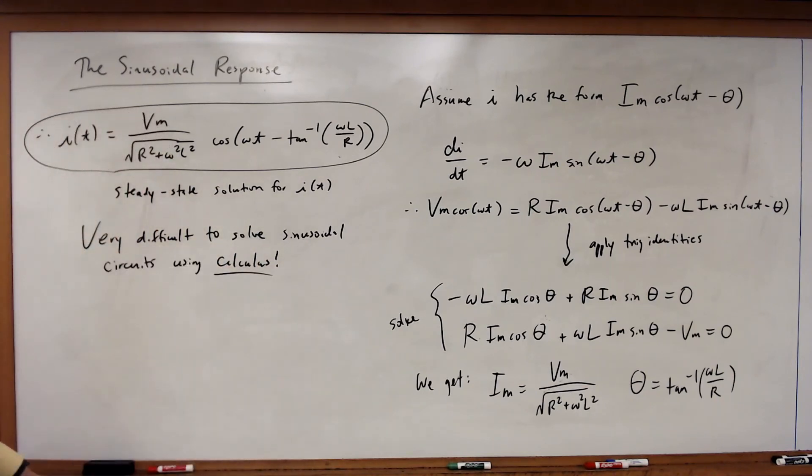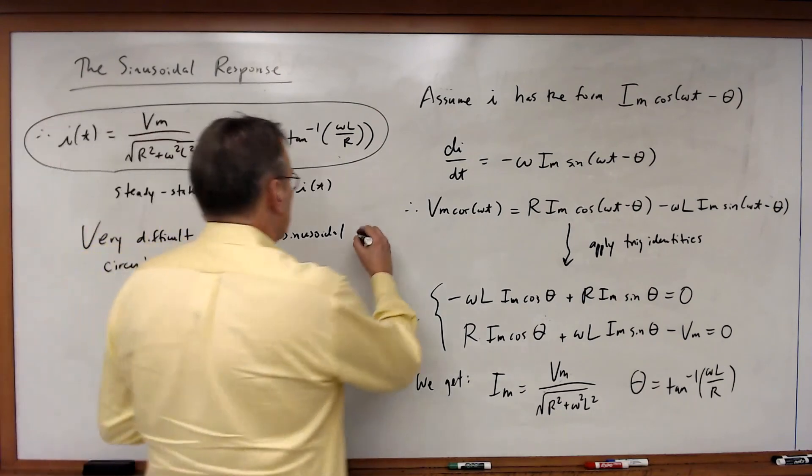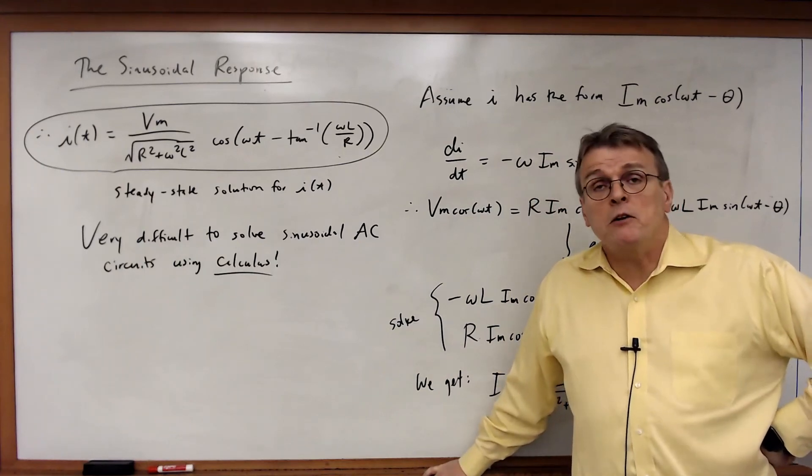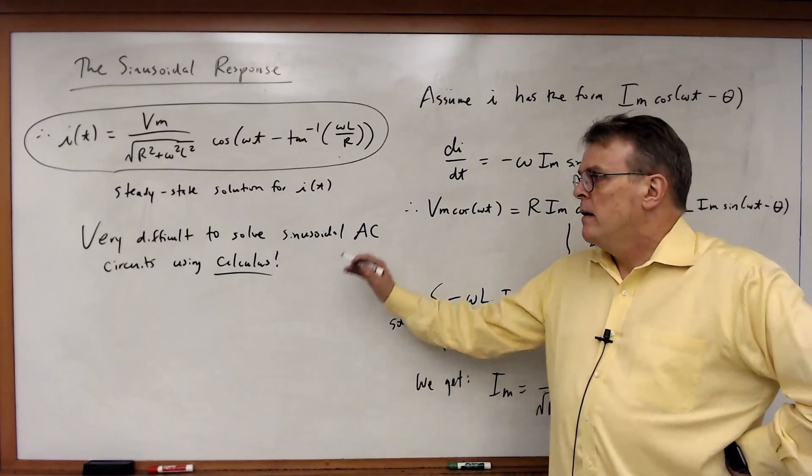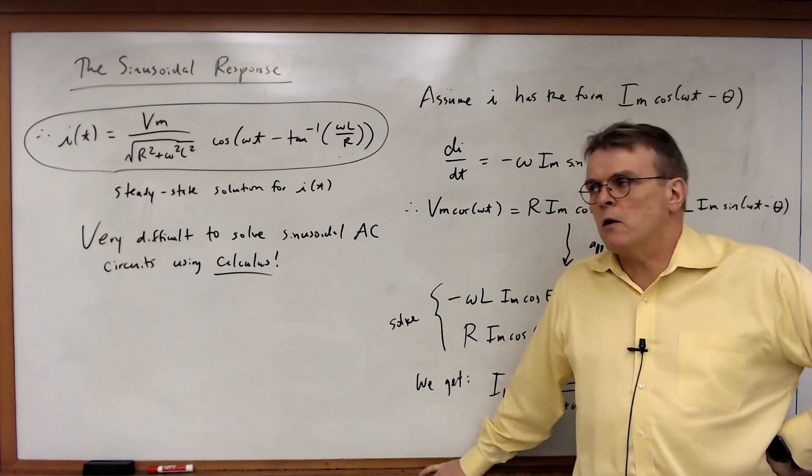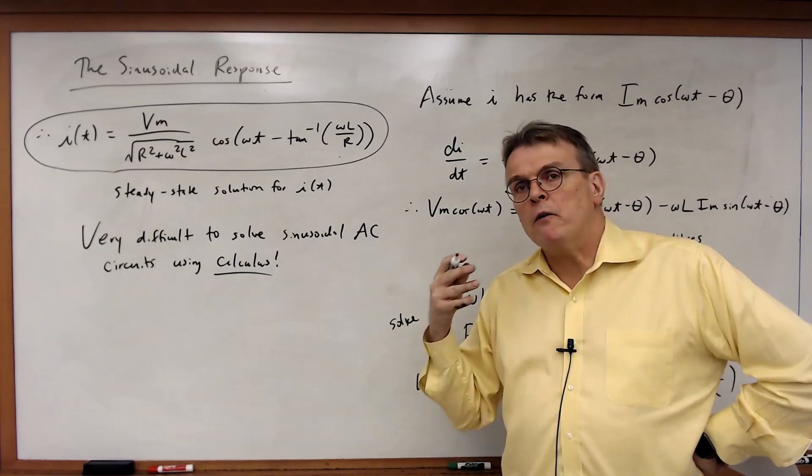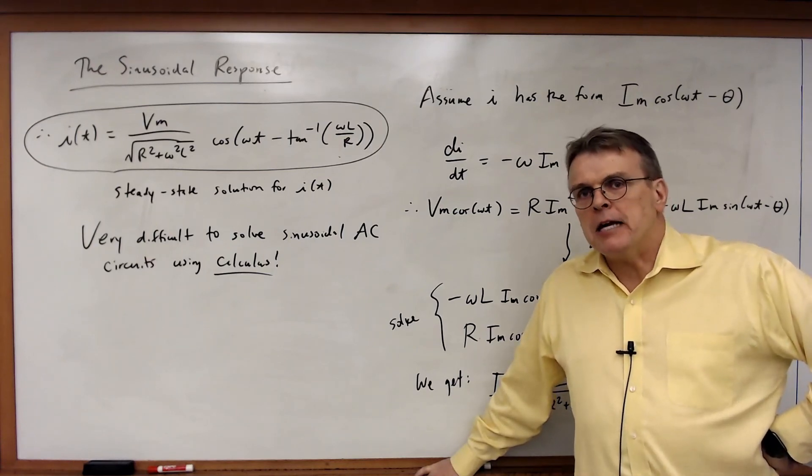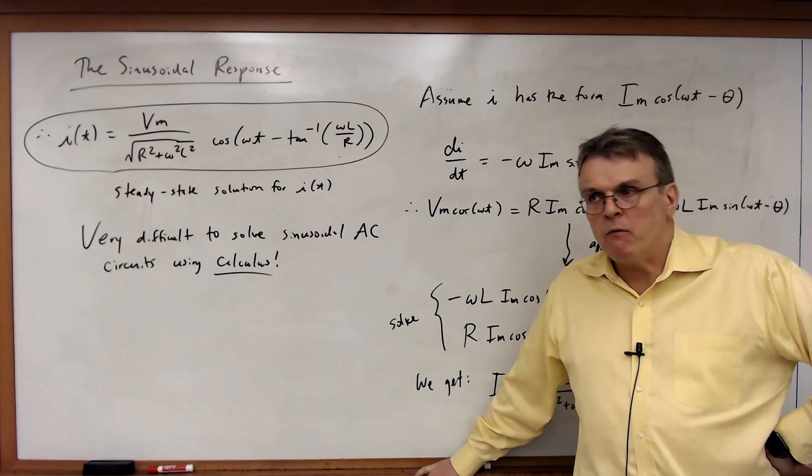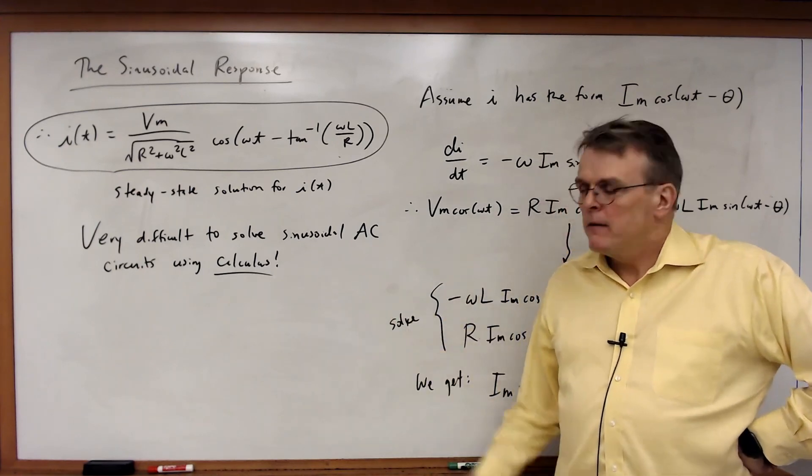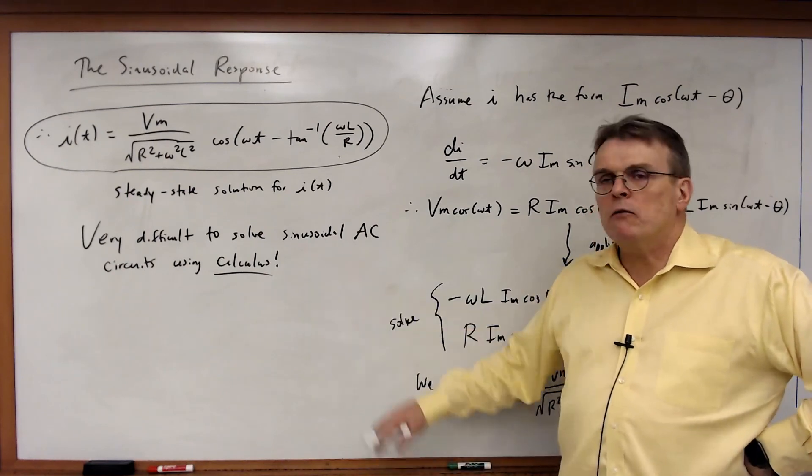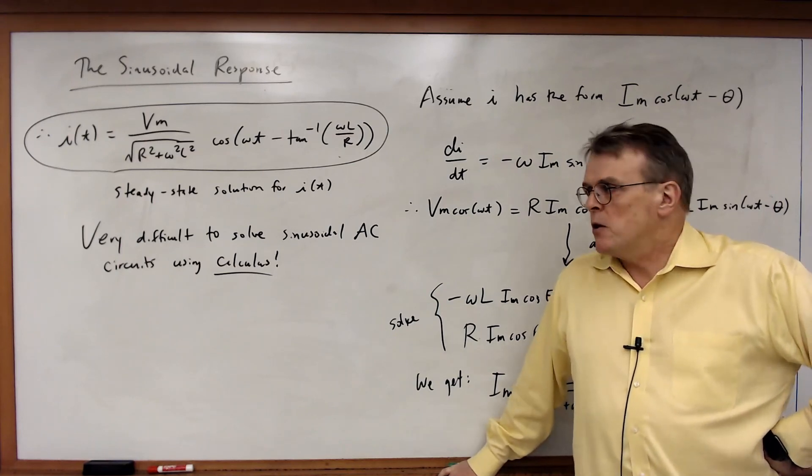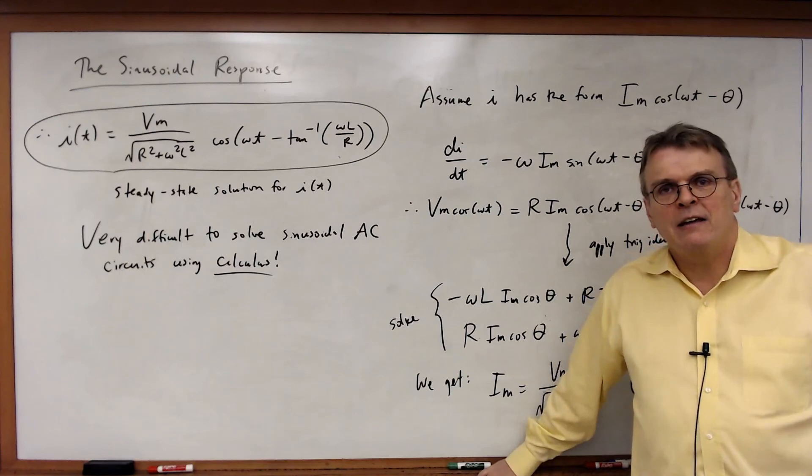The problem is it is very difficult to solve practical circuits using this technique. It is very difficult to solve sinusoidal AC circuits using calculus. In fact, very difficult is the wrong phrase. It is essentially humanly impossible. More than a hundred years ago when engineers were starting to basically wire the country and wire the world for AC electric power, they began to realize that analyzing and predicting how those power networks would behave was beyond their mathematical skill. They didn't have computers. They didn't have any of the modern tools we have. They couldn't rely upon a machine or a calculator to solve their calculus problems for them. So they basically were at a dead end. They needed better math.